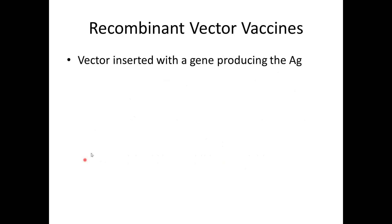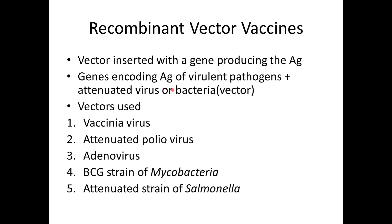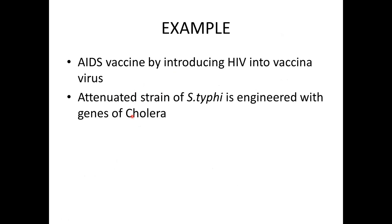Recombinant vector vaccines are inserted with a gene product of the antigen. You take the genes encoding the antigen that causes virulence of a particular pathogen and insert them into an attenuated virus or viral vector — which can also be bacterial. Commonly used vectors are vaccinia virus, attenuated poliovirus, adenovirus, the BCG strain of mycobacteria, and attenuated Salmonella. An example being researched is an AIDS vaccine using HIV DNA introduced into vaccinia virus and attenuated S. typhi engineered with cholera genes.